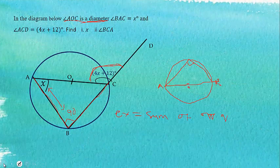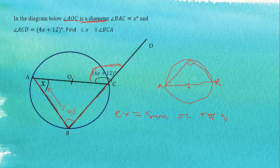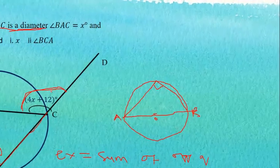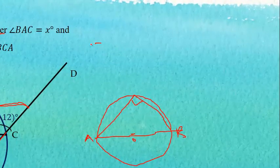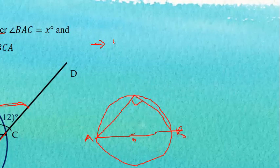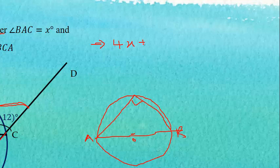With this we can equate this one to this. So we can see that the exterior angle, which is 4x plus 12, is equal to the sum of interior opposite angles, which is x plus 90.